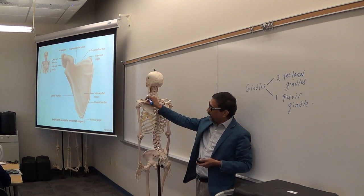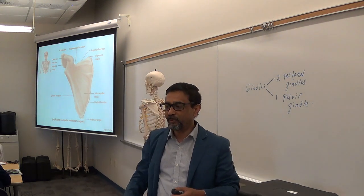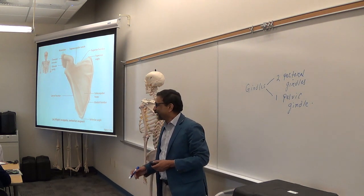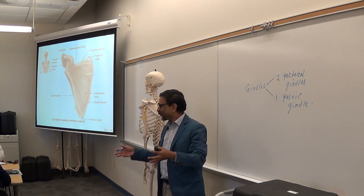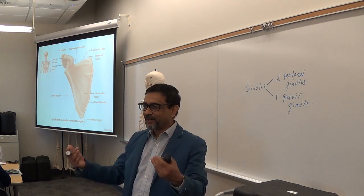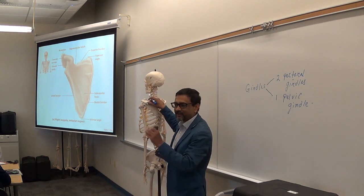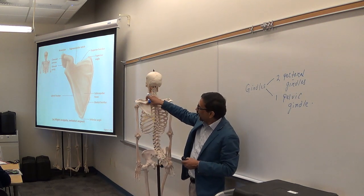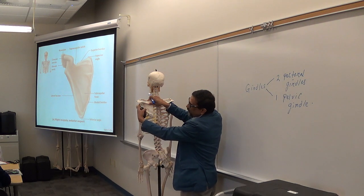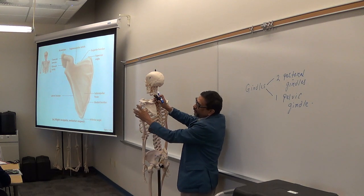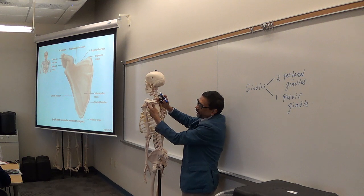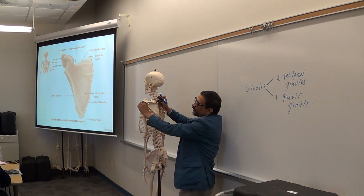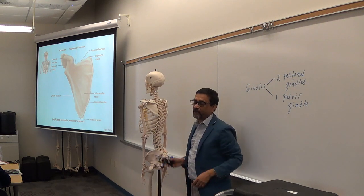The scapula is also known as the shoulder blade — but as anatomy students, use the proper term: scapula, not shoulder blade, just as you should say clavicle, not collar bone. The scapula has a cavity called the glenoid cavity that holds the head of the humerus. The head of the humerus fits in the glenoid cavity at the shoulder joint.